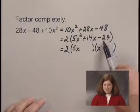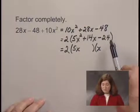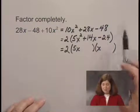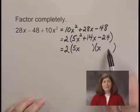24 factors into a lot of different products: 1 times 24, 2 times 12, 3 times 8, 6 times 4. All of those will be possibilities to put in here.